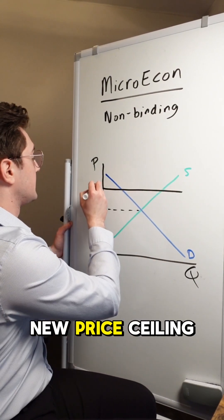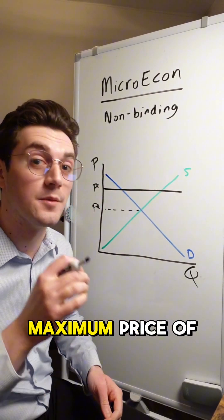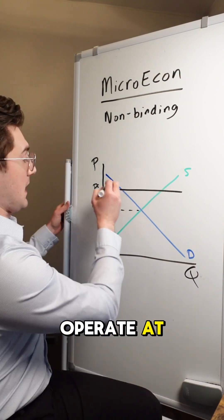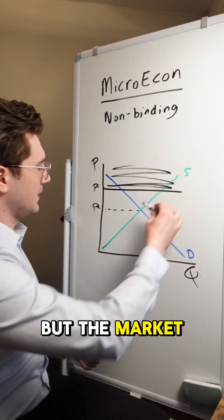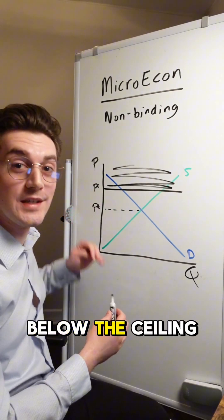So if the government comes in and says, hey guys, this is our new price ceiling, aka our new maximum price that the market can operate at, that invalidates any prices above the ceiling. But the market is already operating below the ceiling.